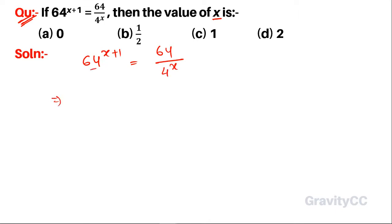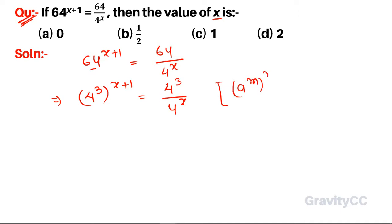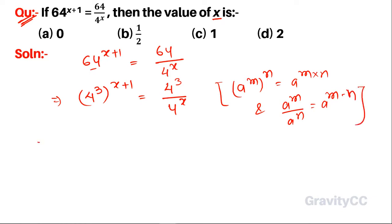64 is 4 to the power 3, so we get 4 to the power 3 cubed upon 4 to the power x. We know that a to the power m to the power n equals a to the power m into n, and a to the power m upon a to the power n equals a to the power m minus n. So 4 to the power 3x plus 3 equals 4 to the power 3 minus x.